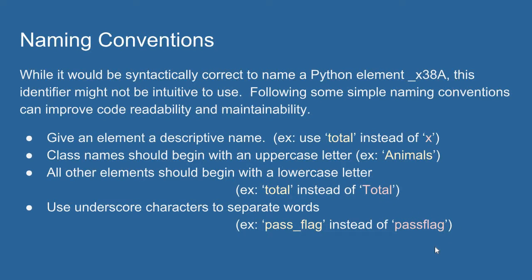In Python, the convention is if you have multiple words in an identifier, to make them easier to read, you can separate those words using an underscore character. Instead of pass flag as one identifier, you can make it a little easier to read by using an underscore. These are some of the conventions that are followed in Python.